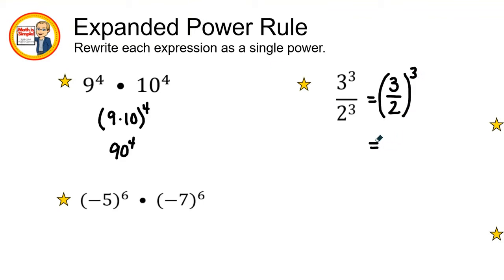But we just need to rewrite each expression as a single power. This is a double power. We have two powers here. We want to write it where we just have one power.